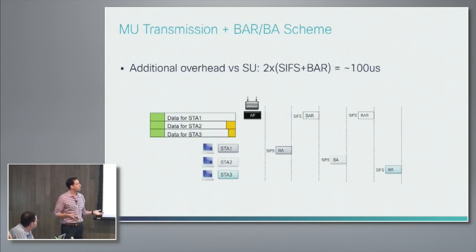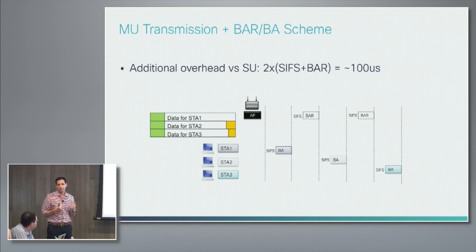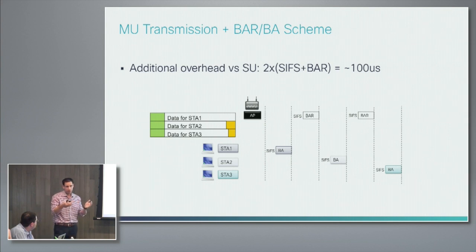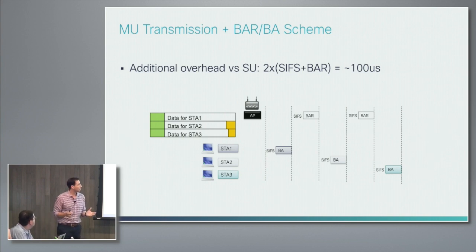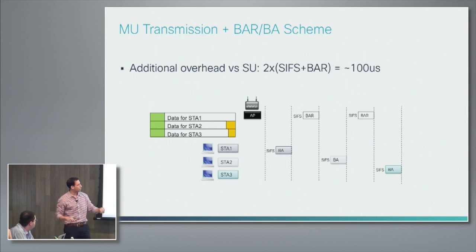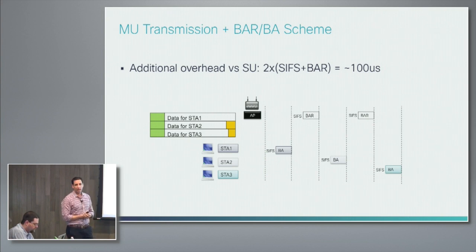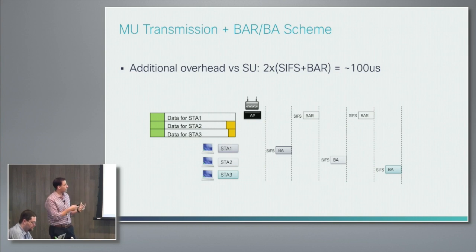When sending an MU frame, in regular SU there's a frame followed by a block ACK — the client says which parts it received properly and requests retransmission of what it didn't. But with MU you can't use that protocol directly because all three clients would send the block ACK back at the same time. Instead, one client sends the block ACK immediately, and the rest need to be polled for that information. That adds extra overhead to sending MU as well.